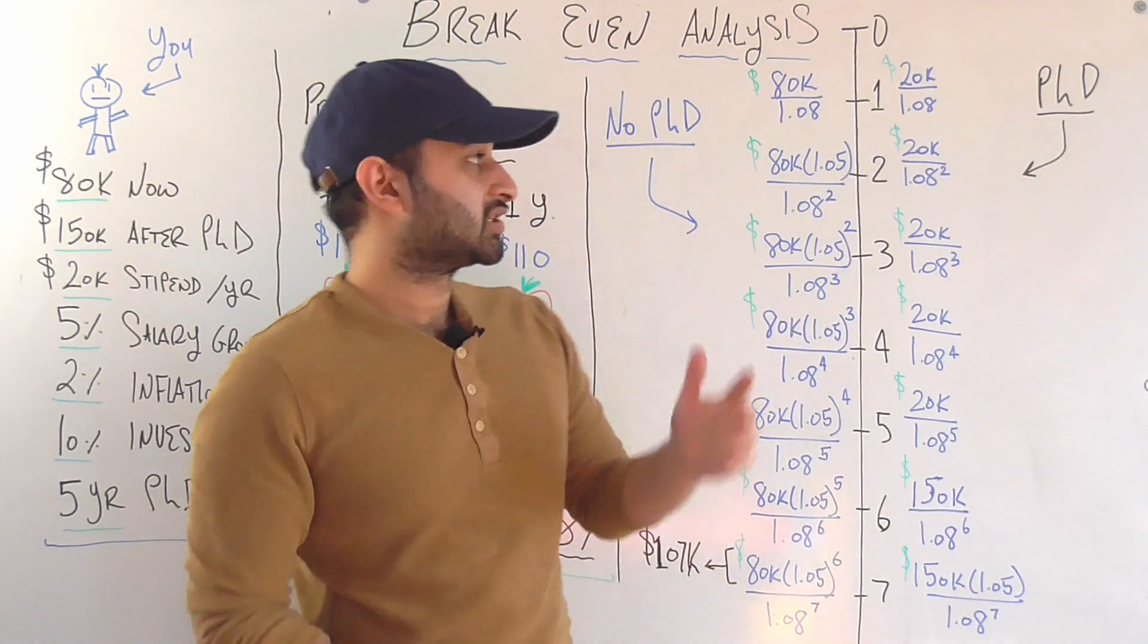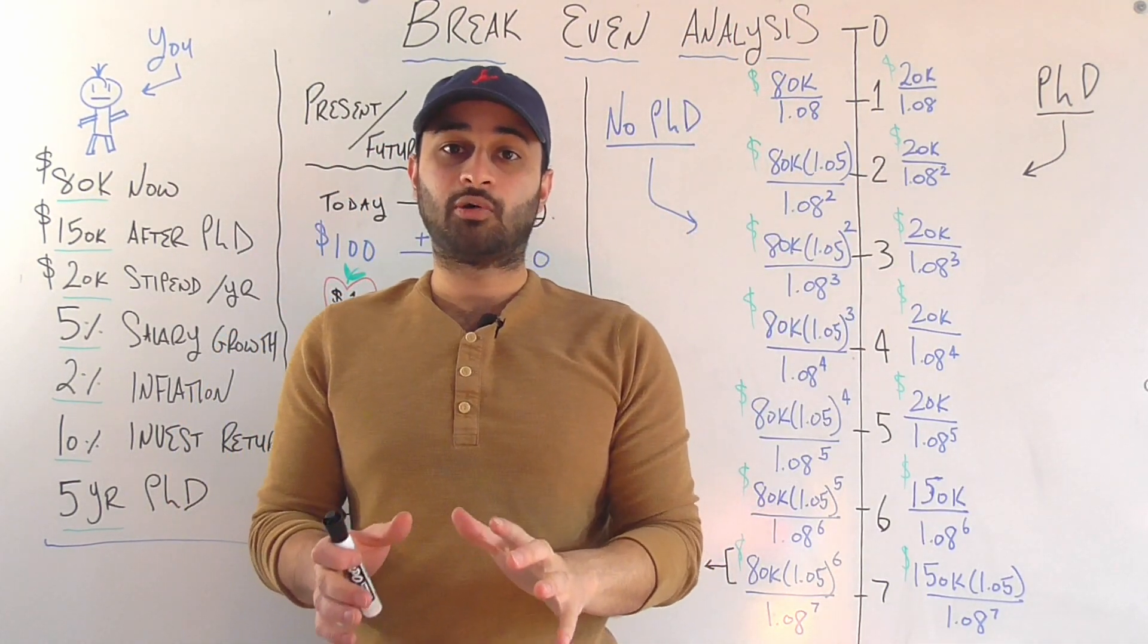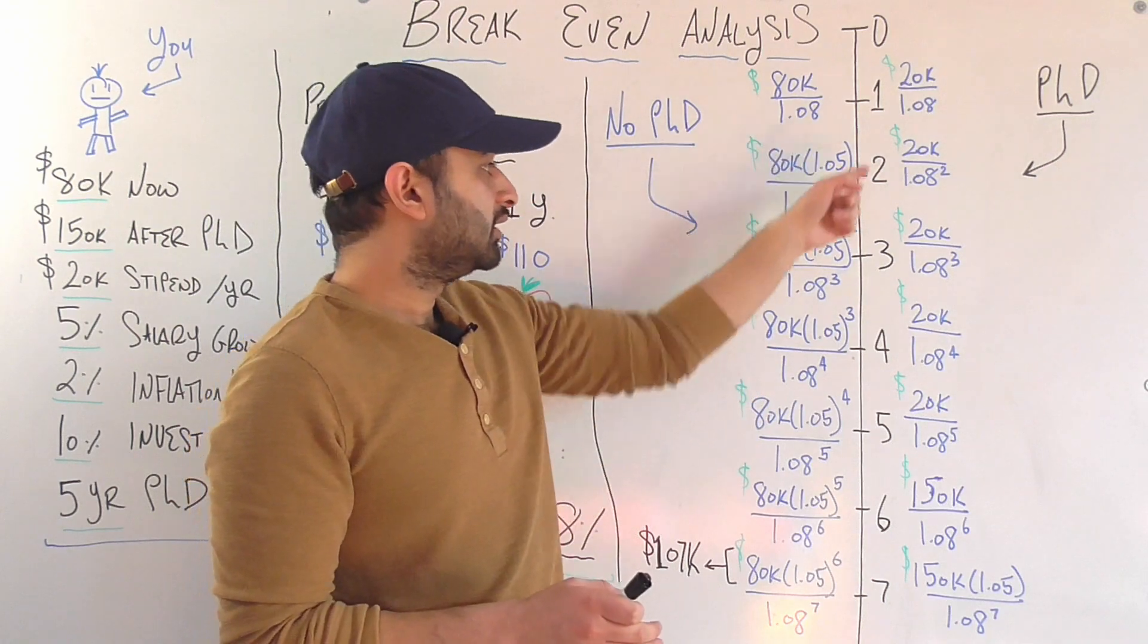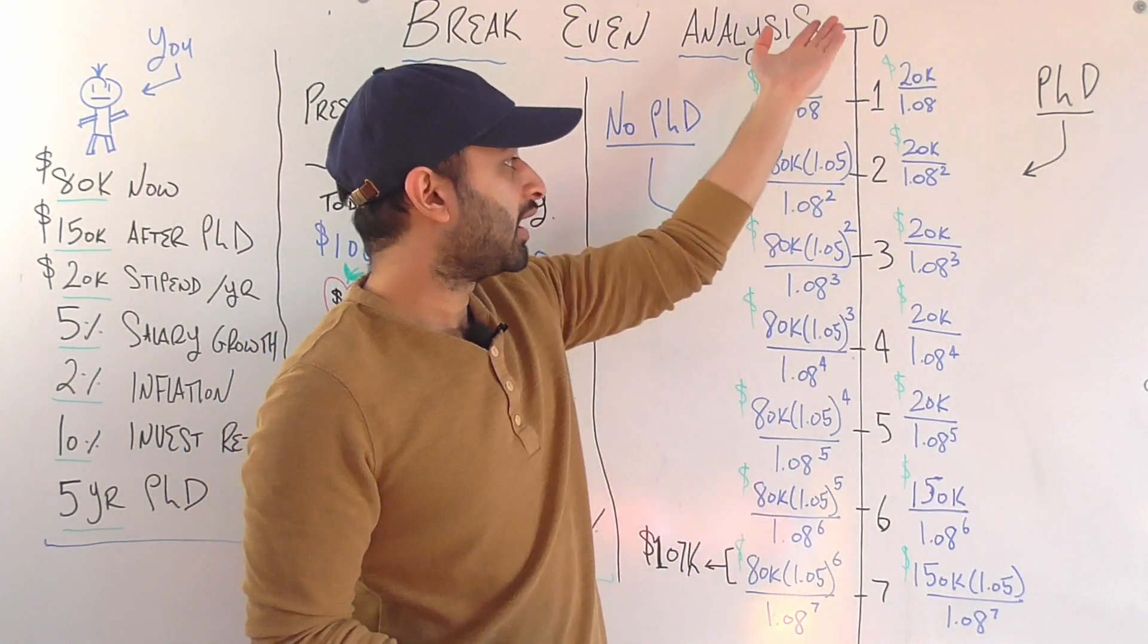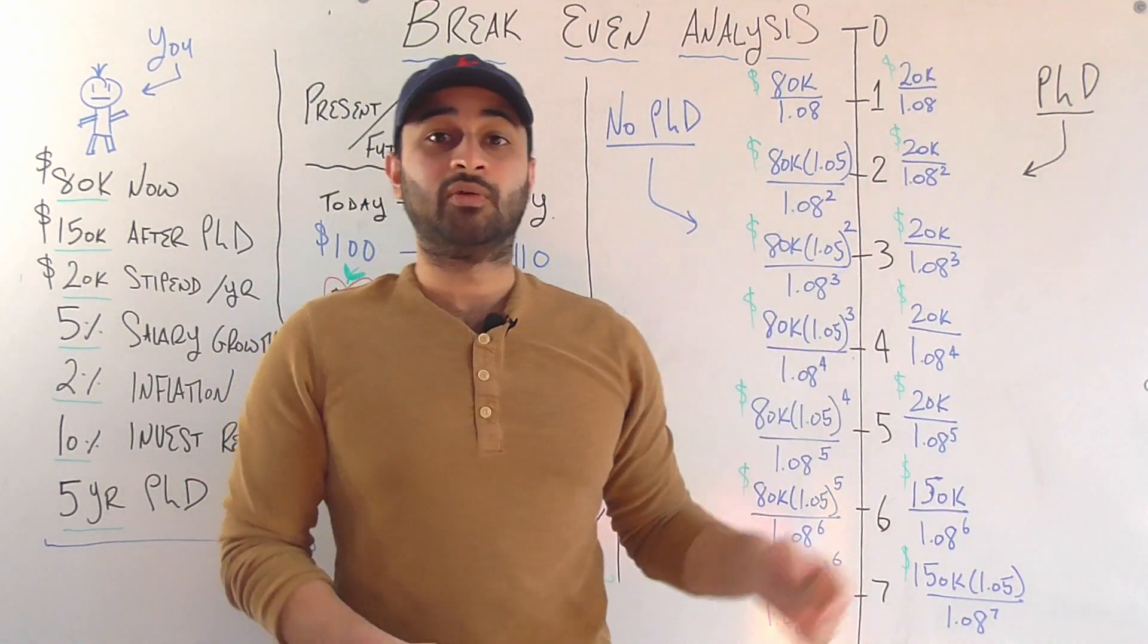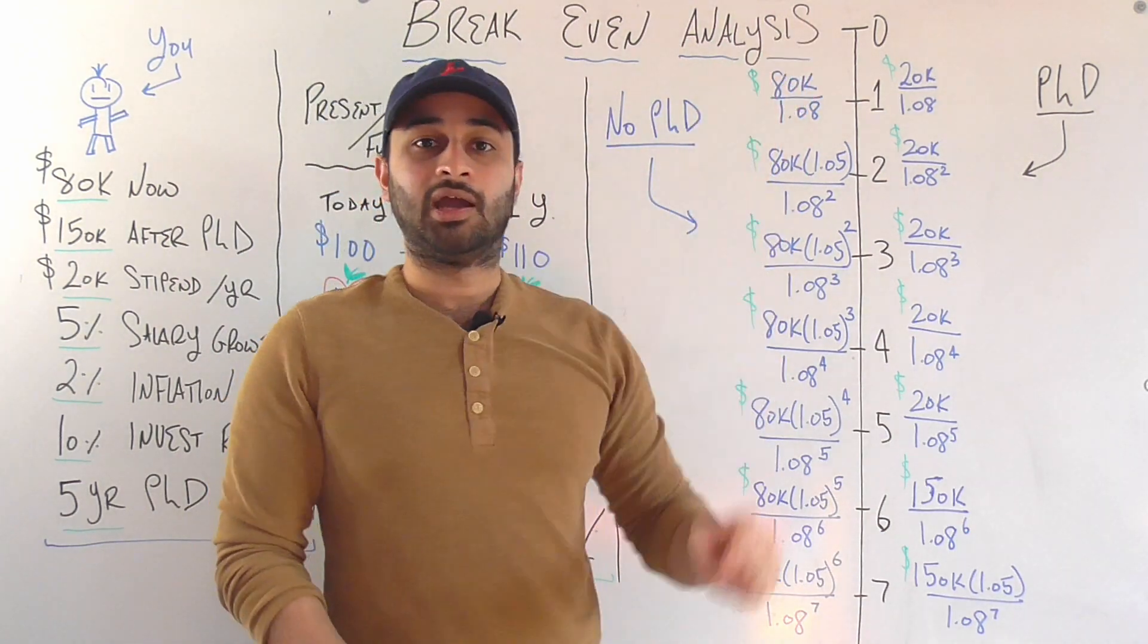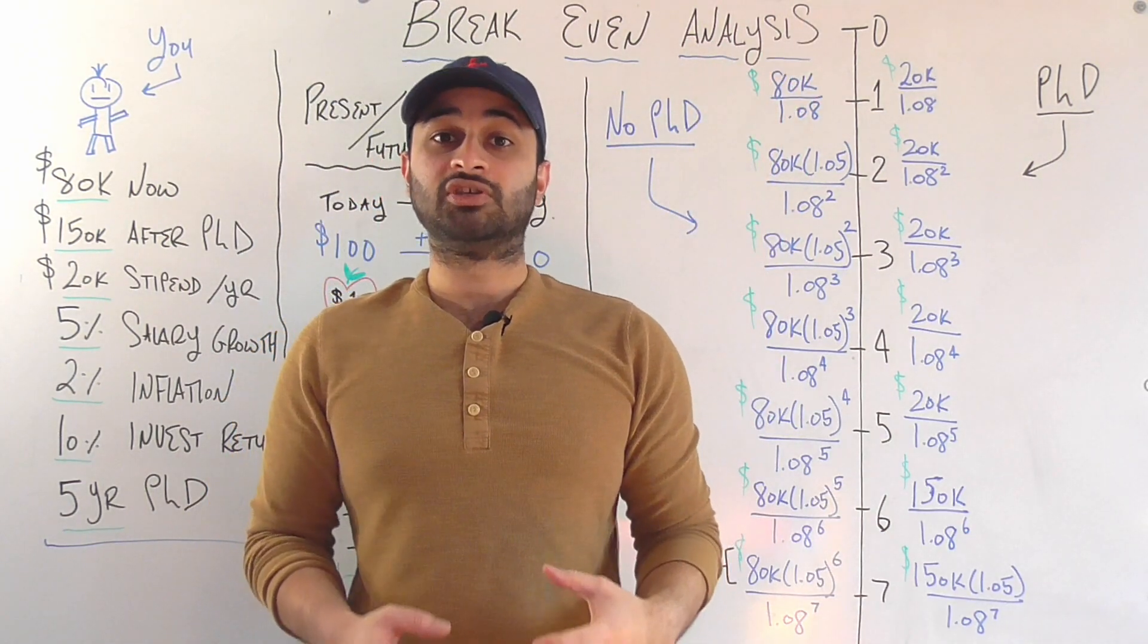The reason it's squared is because now we're looking two years into the future, but we're still crucially asking the question about what is that income worth today, which is two years prior. And so we have to divide by 1.08 to get back one year. And then we have to divide by 1.08 again to get back to the present day. And so that ends up being dividing by 1.08 squared.